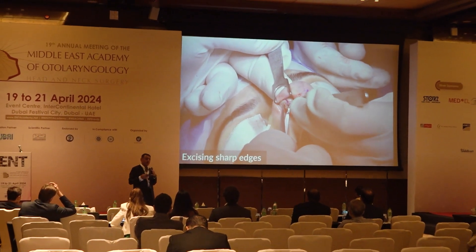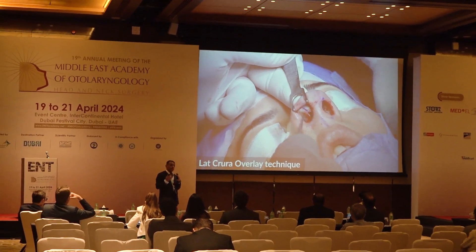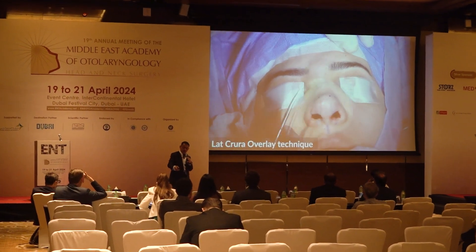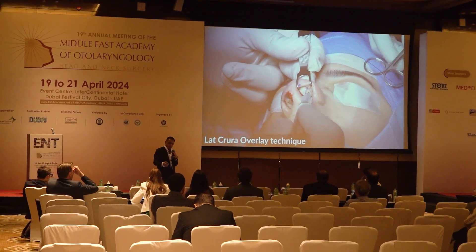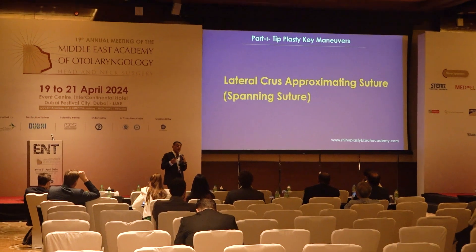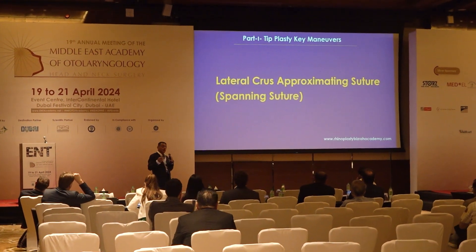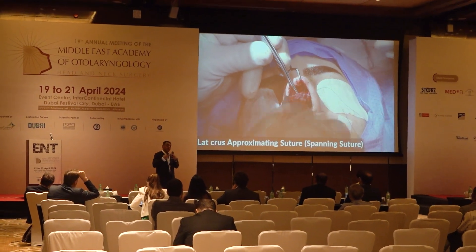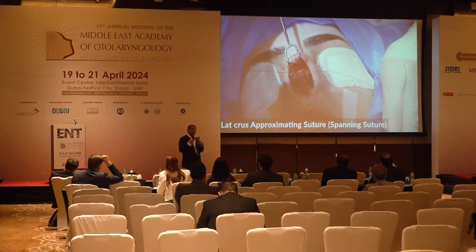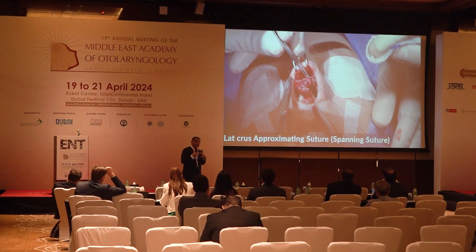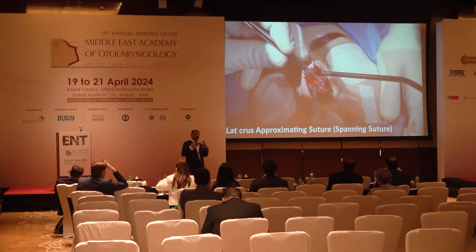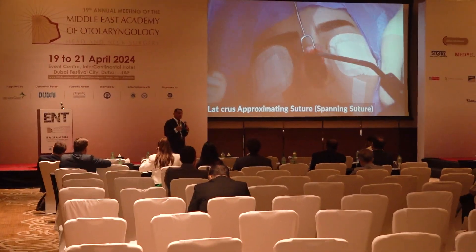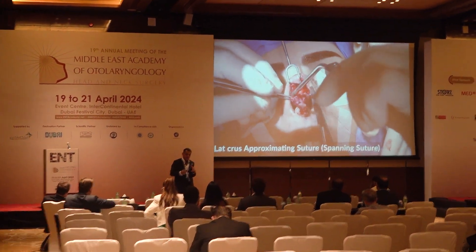Another key maneuver is the alar cartilage approximating suture, which achieves multi-definition, multi-refinement, and projection. This suture approximates the lateral crus to the midline, stabilizes the posterior crus to the midline and to the dorsal cartilage, stretches the alar sidewall, stabilizes the tip in the midline, and reduces alar flare. It achieves multi-definition and multi-refinement with preservation of the entire cartilage, without over-excision.